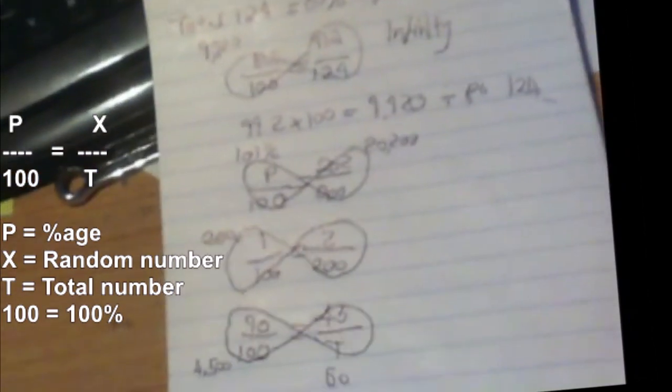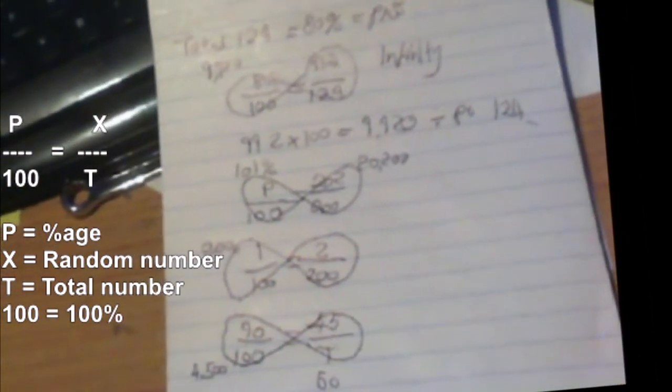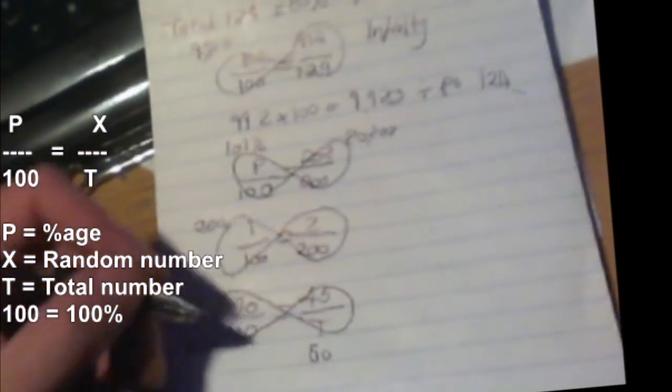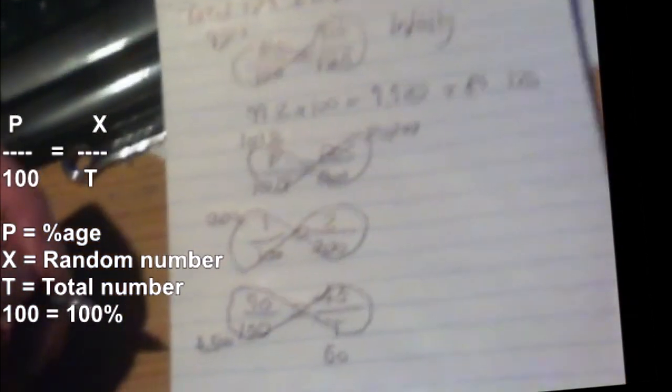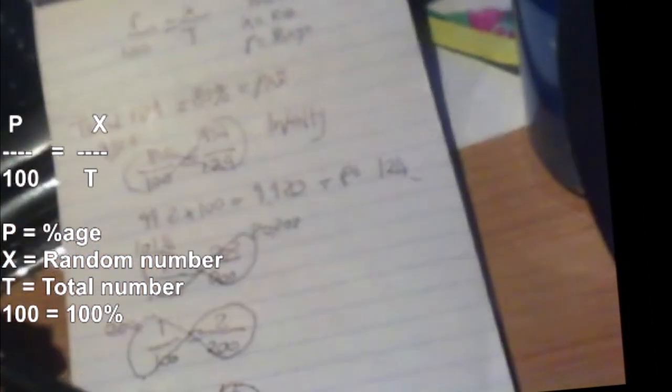Let's make sure. We can do 50 times 90, equals 4,500, divided by 45—this is 100. And if you went 50 times 90 and then divided by 100, you get 45.